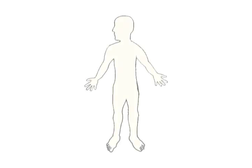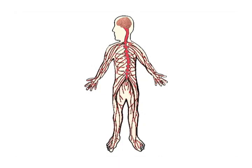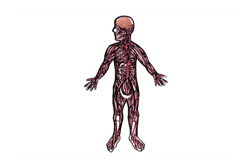The brain acts as a control center telling the body how to respond to its environment. Nerves from the motor cortex connect to nerves in the spinal cord. Spinal cord nerves connect to muscles. The brain uses the nerve connections between the motor cortex and spinal cord to direct movement. The nerve connections are like wires that conduct messages between the brain and the body.